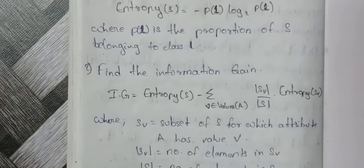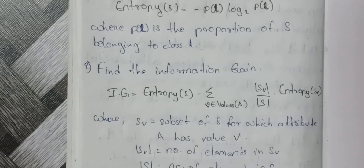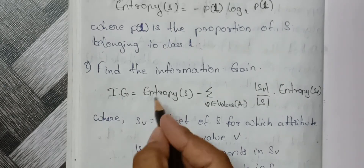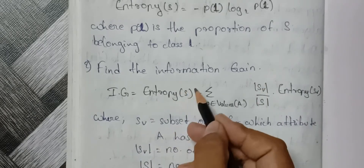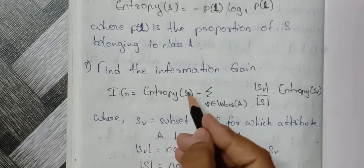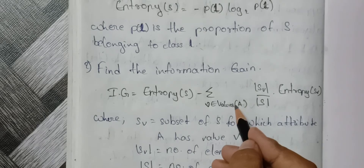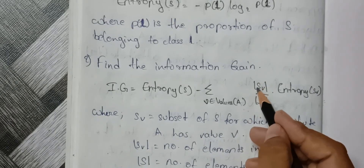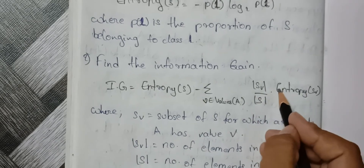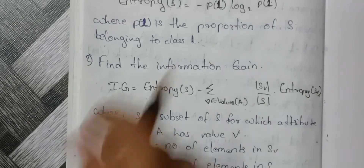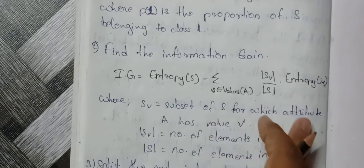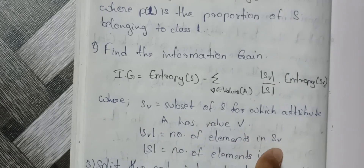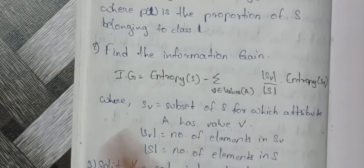Find the information gain. The formula for information gain is: entropy of S minus sigma over V belonging to all values of A, of the quantity (|S_V| divided by |S|) times entropy of S_V, where S_V is the subset of S for which attribute A has value V, |S_V| is the number of elements in S_V, and |S| is the number of elements in S.